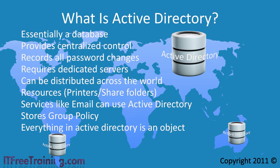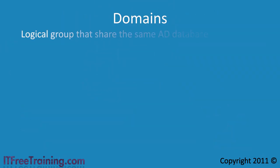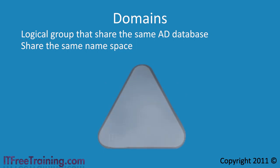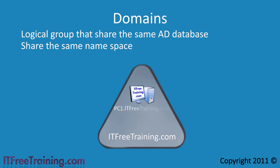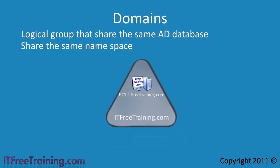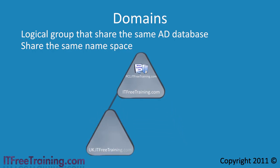In order for users and computers to be put in a logical management structure, Microsoft allows you to create a domain. A domain is a logical group of computers that share the same Active Directory database. All computers in a domain also share the same namespace. For example, if you had ITFreeTraining.com as your domain, then any computer in that domain will share that namespace — like PC1.ITFreeTraining.com. Usually a domain will mirror the company organization. If ITFreeTraining was to have a smaller company in London, a separate domain could be created for that company, which could be called UK.ITFreeTraining.com.